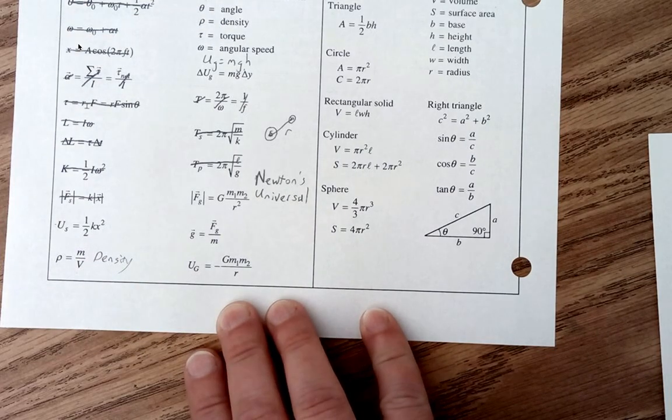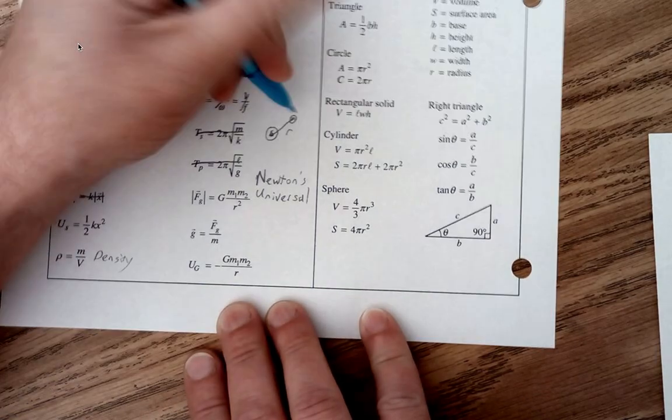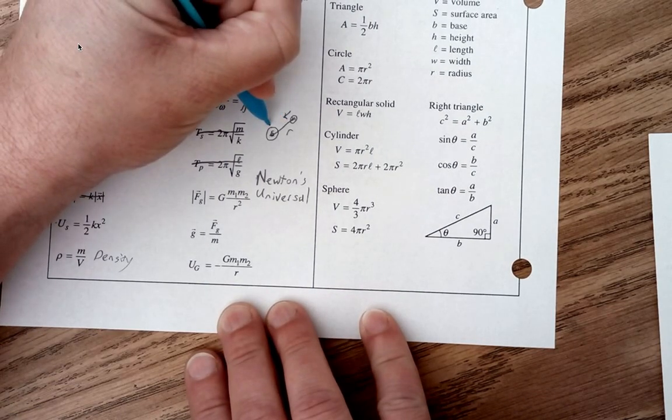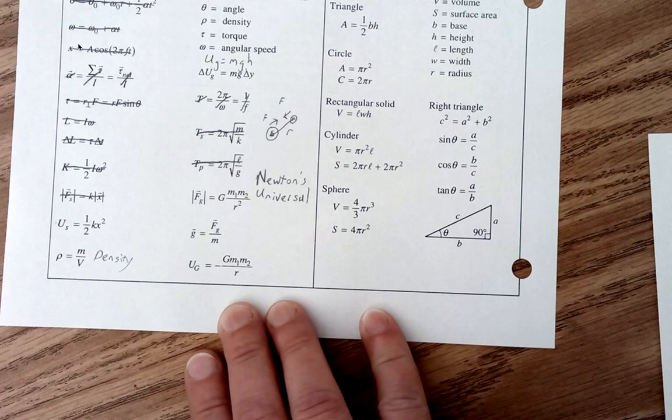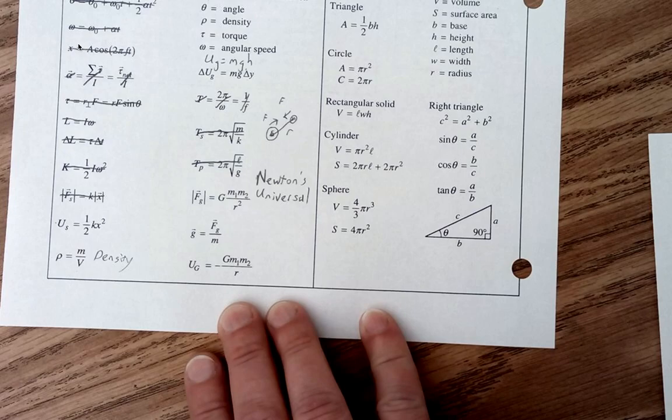That would be that radius r, and we know that they're both going to be attracted to one another. And that would be one of those Newton pairs where it can show that they are attracted to one another.